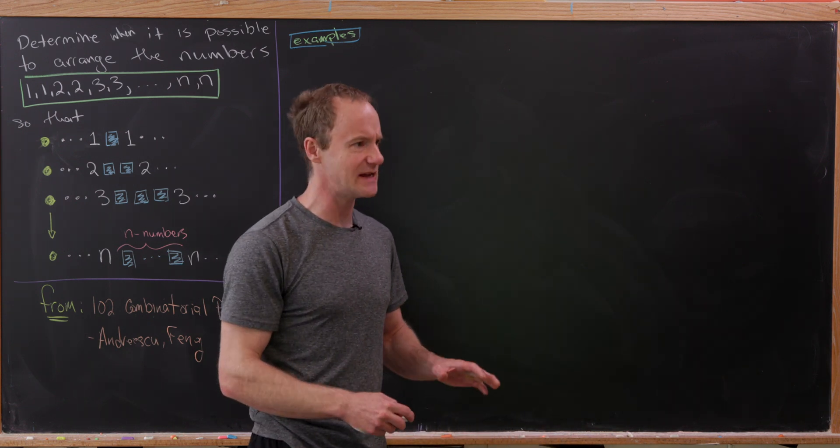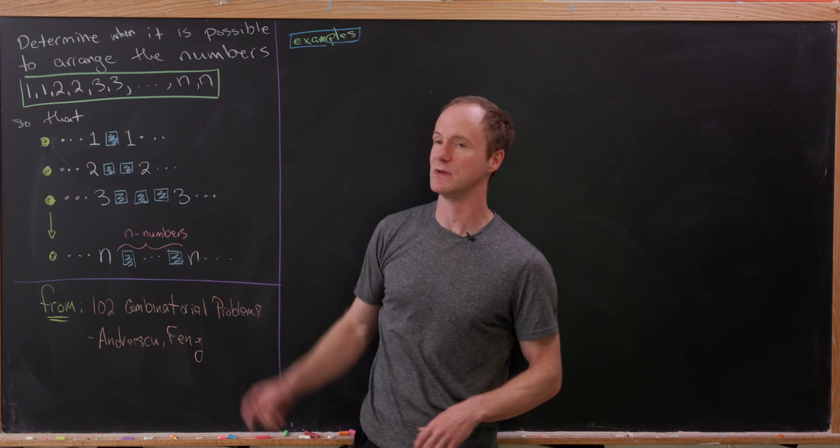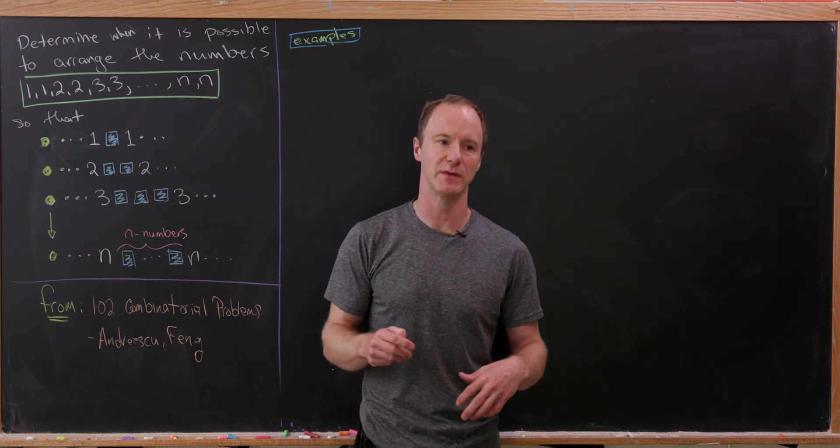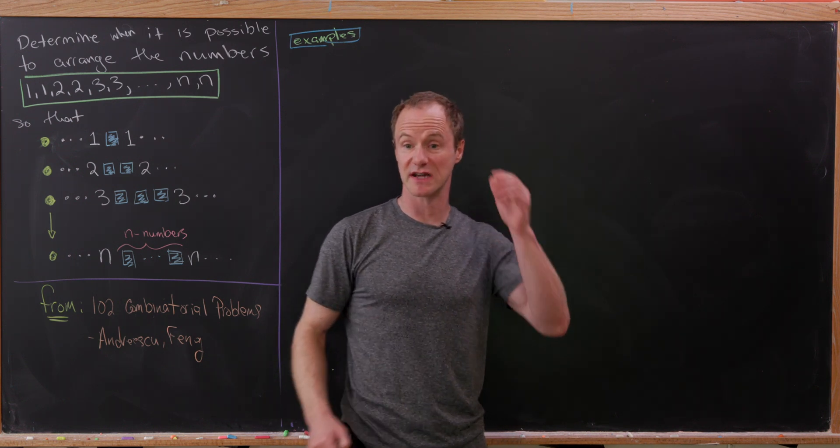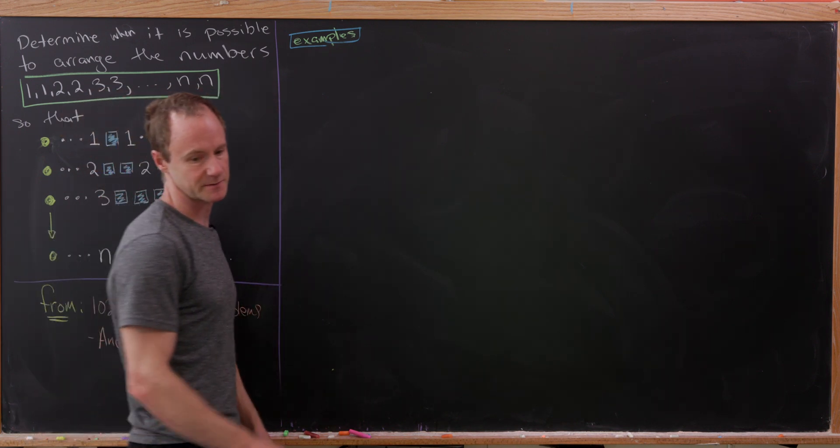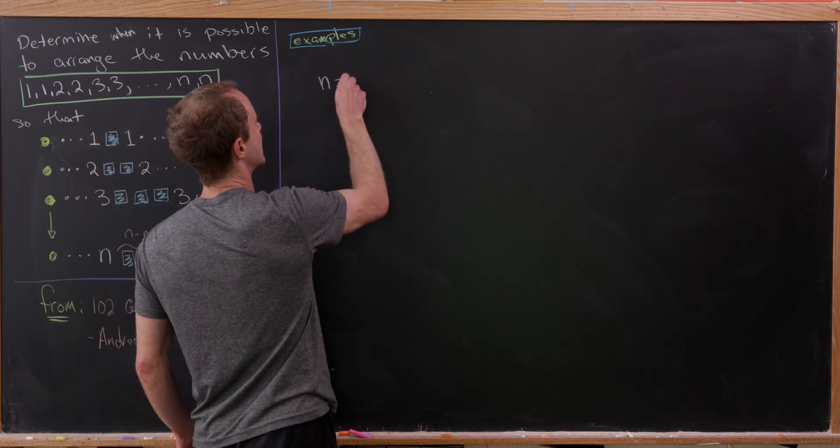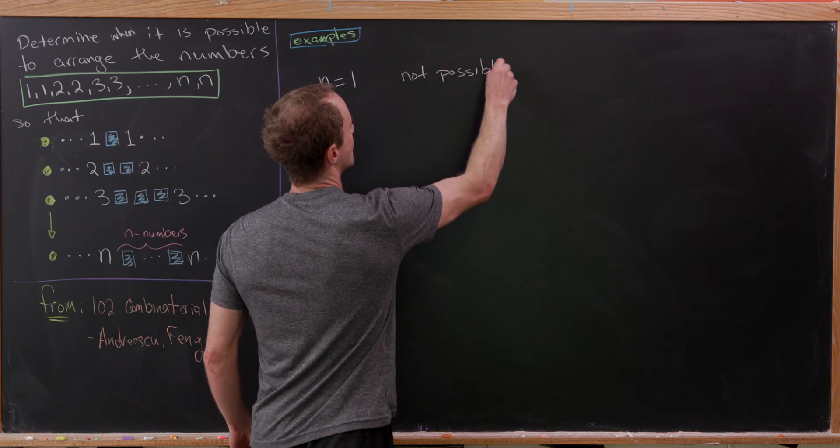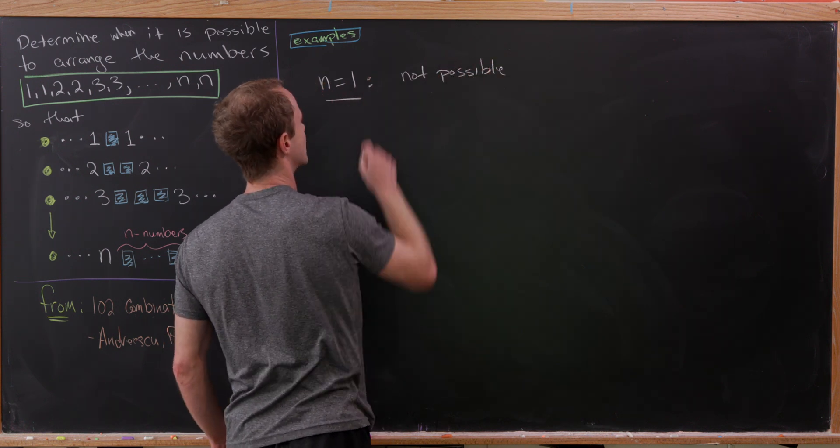To get an idea of when this might be possible, the when is kind of a hint that it'll be possible for certain types of values of N. Let's notice for N equals 1, this is not possible.